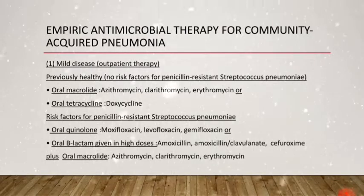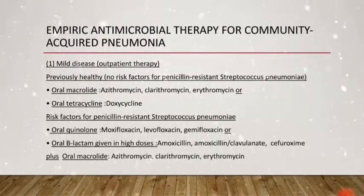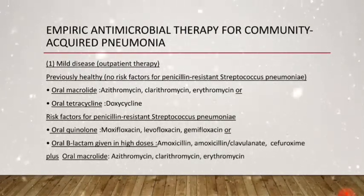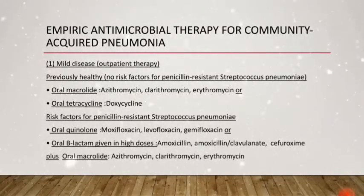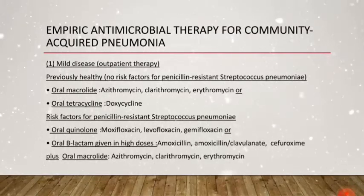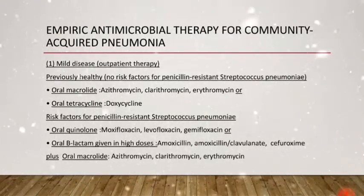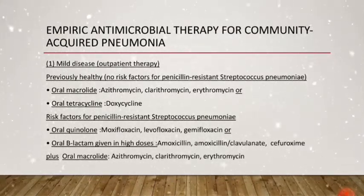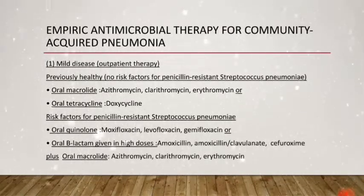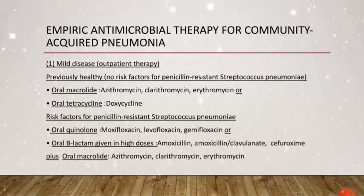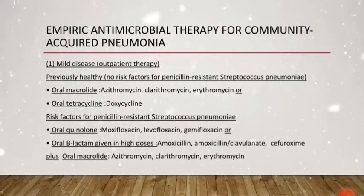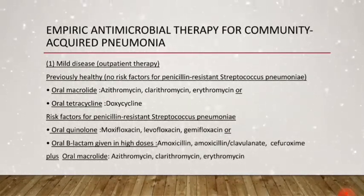First, for mild disease in the outpatient setting: if the patient is previously healthy — meaning they have no risk factors for penicillin-resistant Streptococcus pneumoniae — they can be started on an oral macrolide antibiotic, either azithromycin, clarithromycin, or erythromycin, or alternatively oral tetracyclines such as doxycycline.